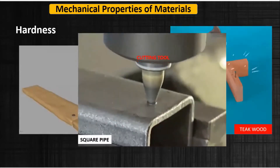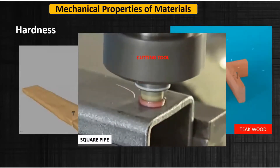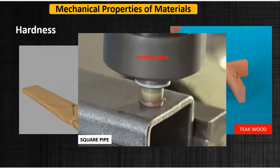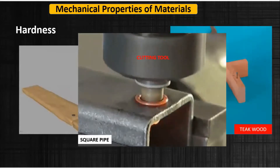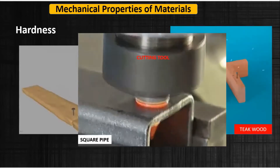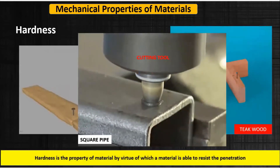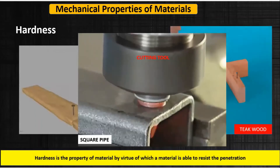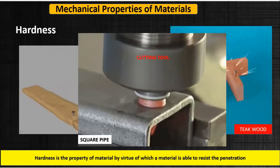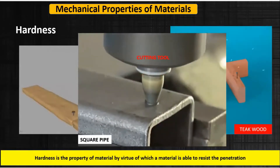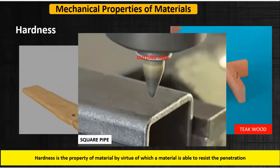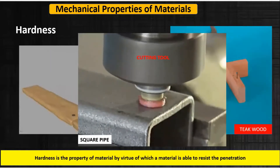Let's take another example. A hole is produced in a mild steel square pipe with a cutting tool, because the cutting tool is harder than the square pipe. So hardness is the property of a material by virtue of which a material is able to resist penetration. Hardness of a metal can be tested by the Brinell hardness testing machine or the Rockwell hardness testing machine.